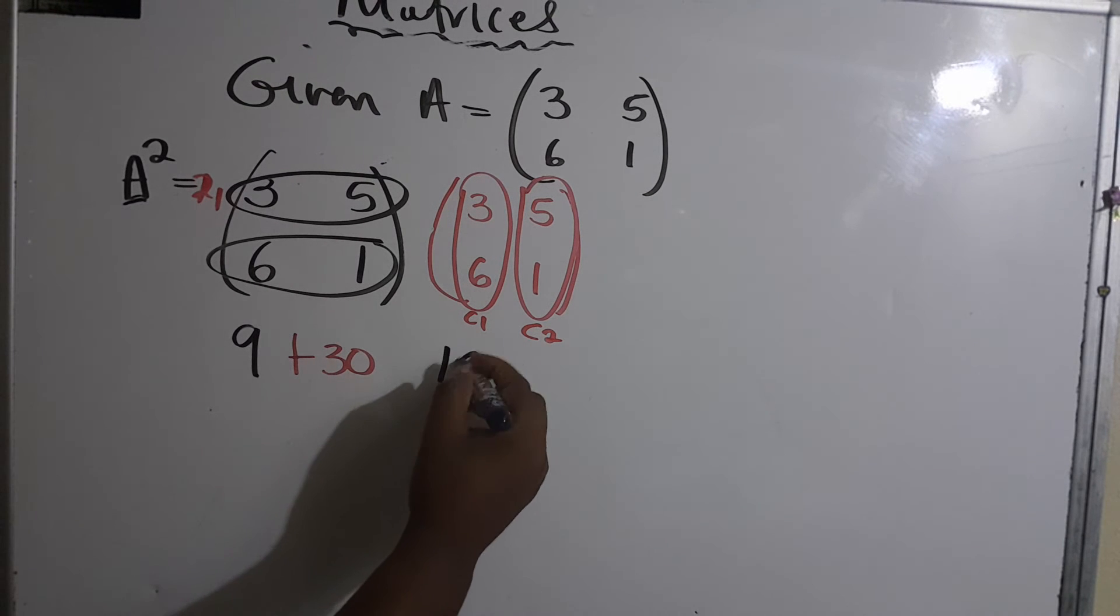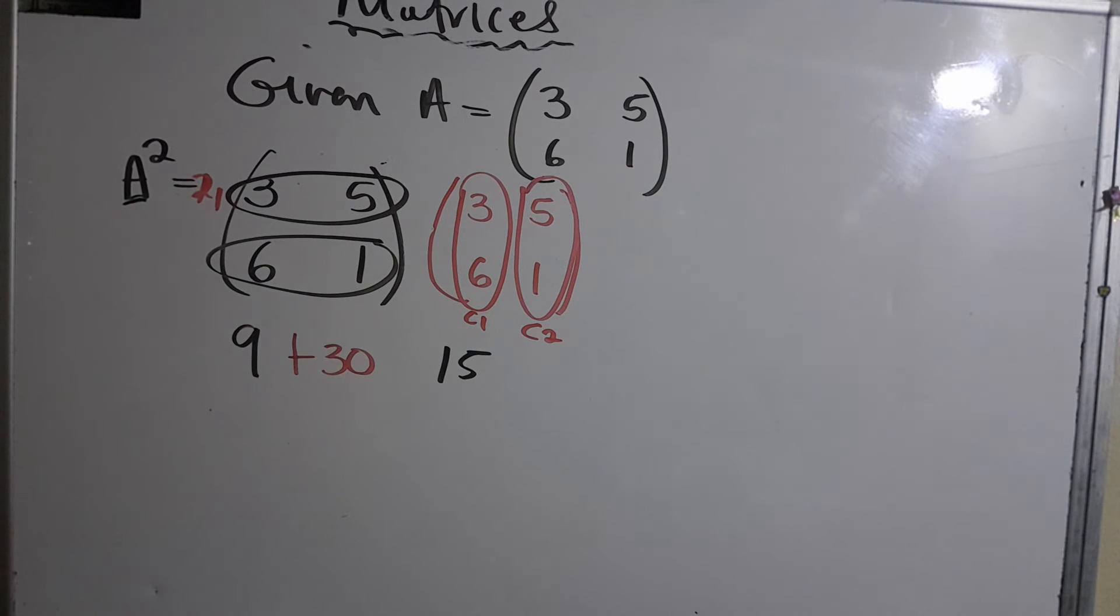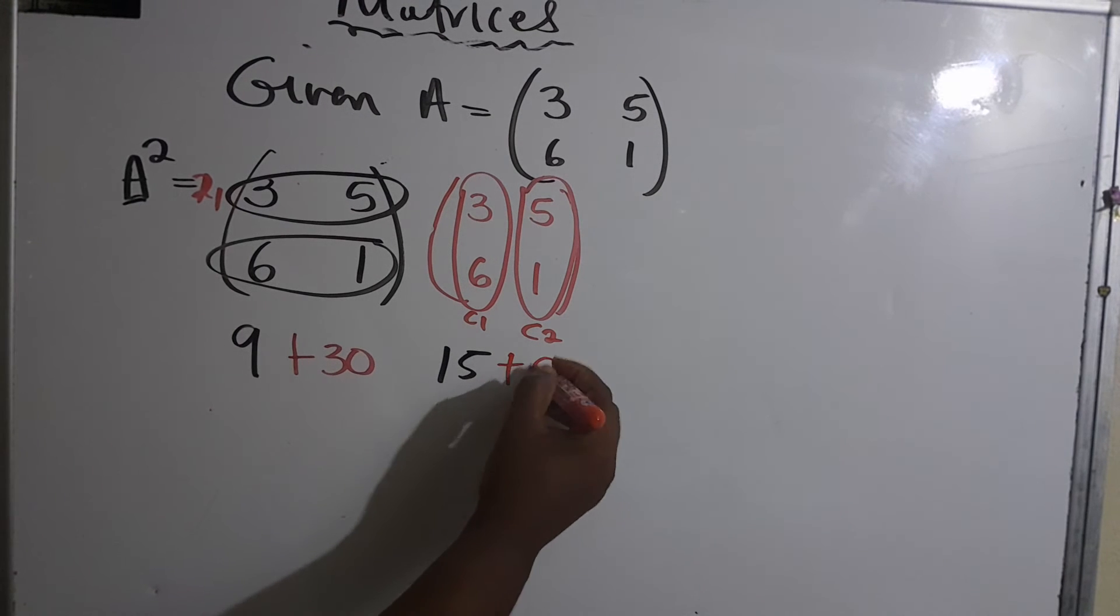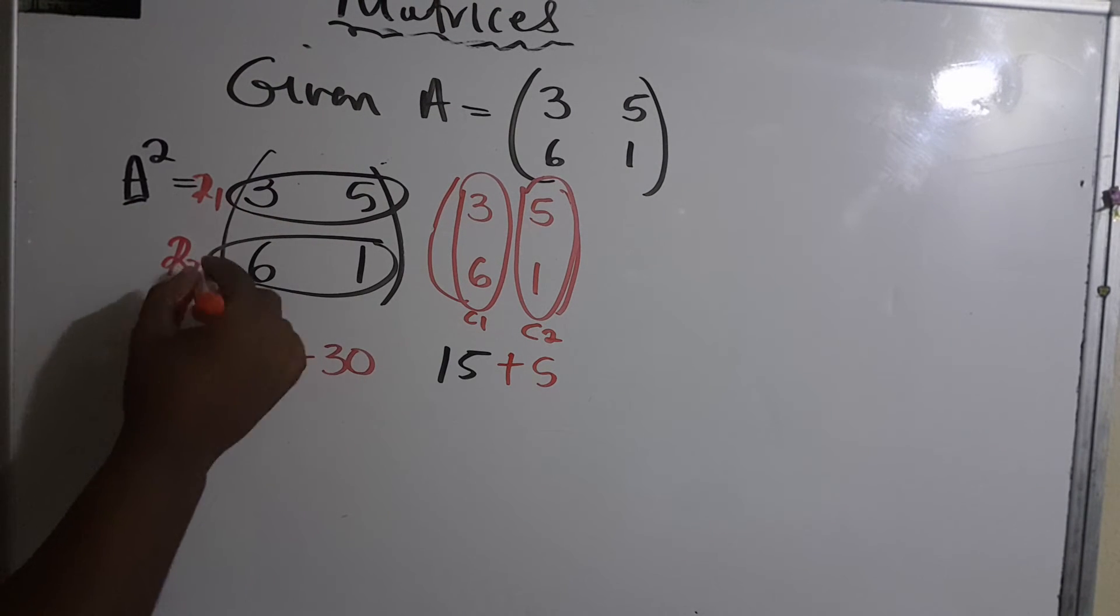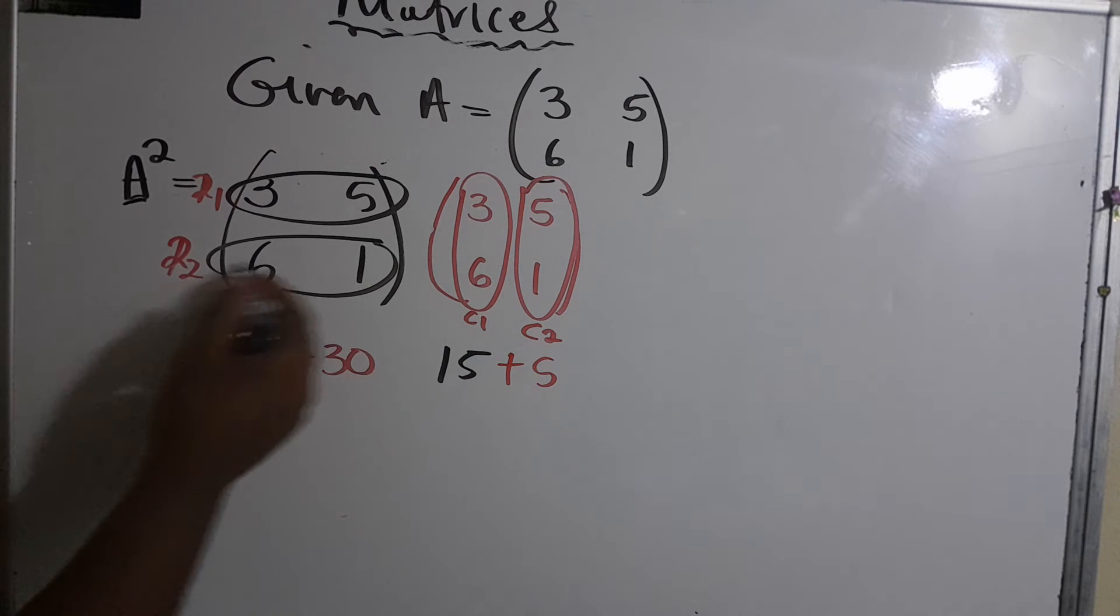Now on to row two. Row two times column one: six times three is 18, one times six is 6.